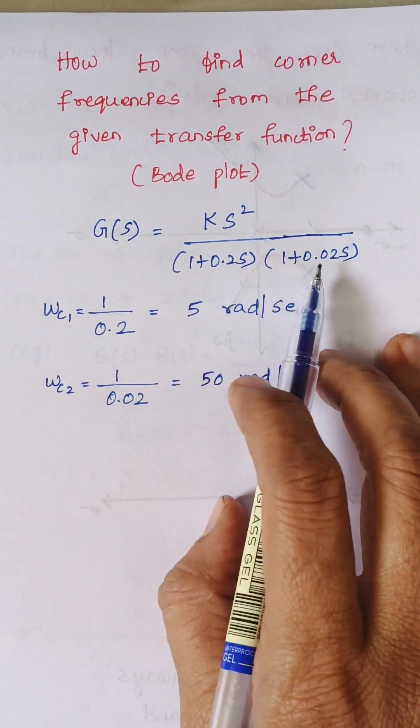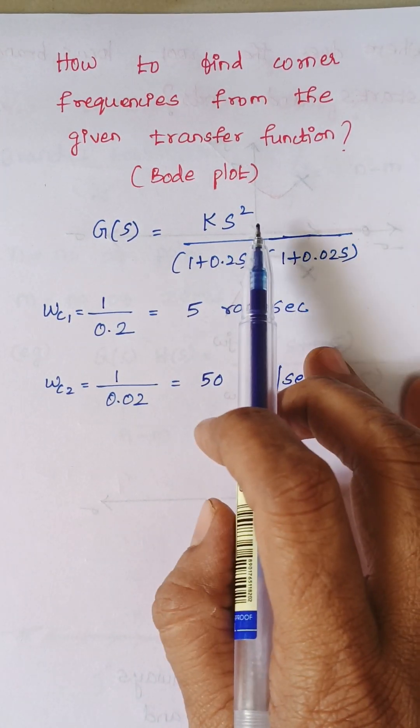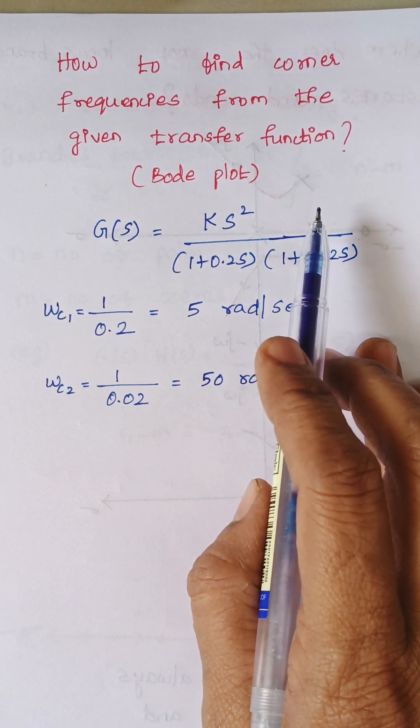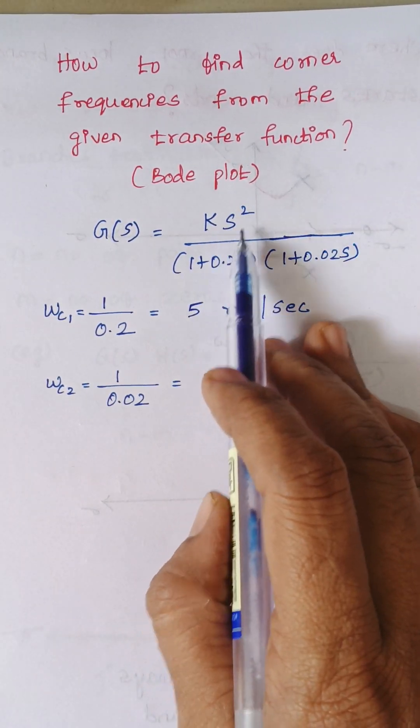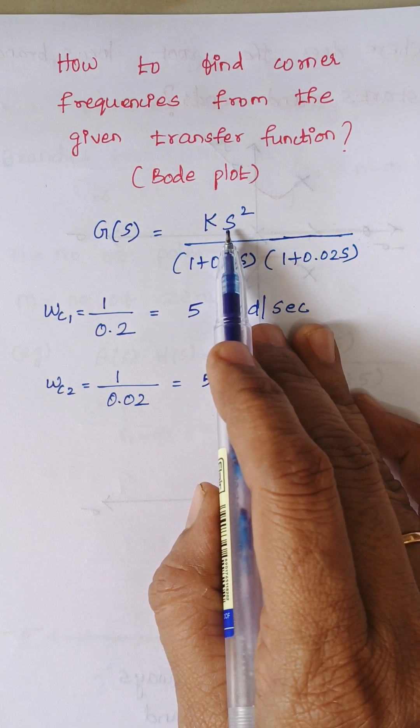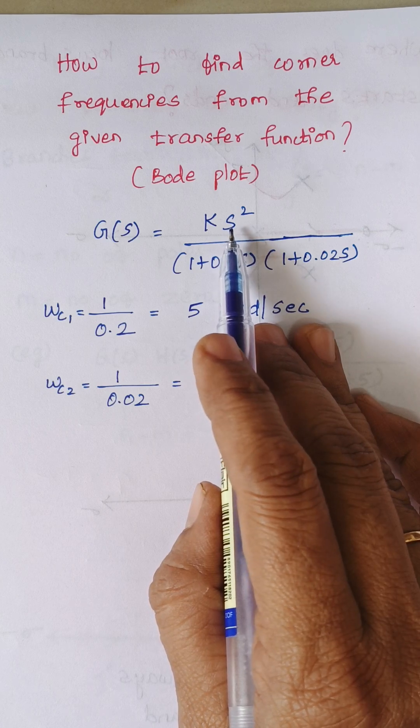For example, consider this transfer function. In the numerator term, we don't have any 1 plus some number with S term. We are having only individual S term, and individual S term or S square or S cube, they won't contribute any corner frequency.